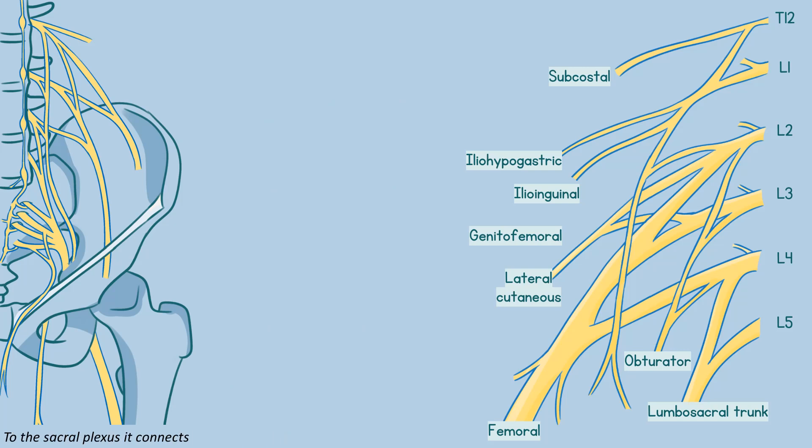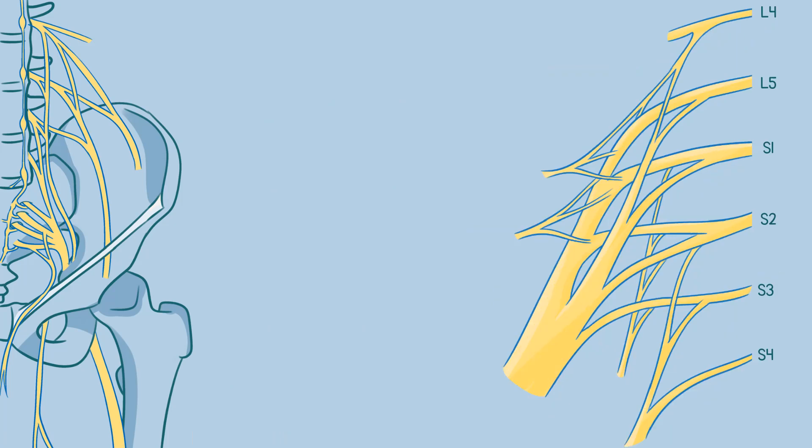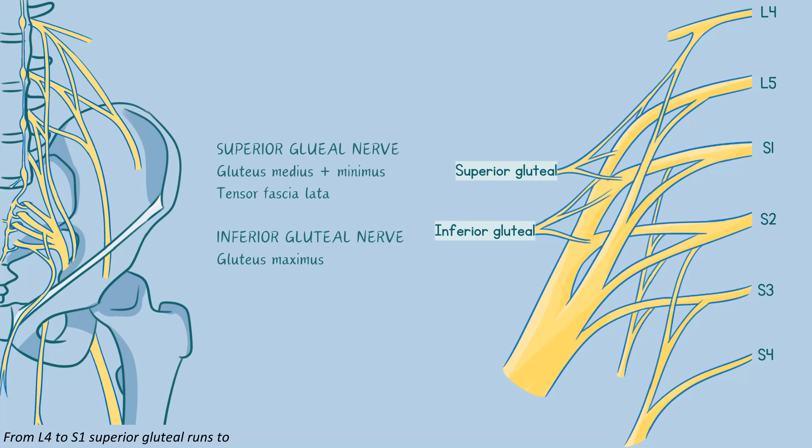The lumbosacral trunk is on the very outside — to the sacral plexus it connects. From L4 to S1, the superior gluteal nerve runs to the gluteus muscles, tensor fasciae latae.